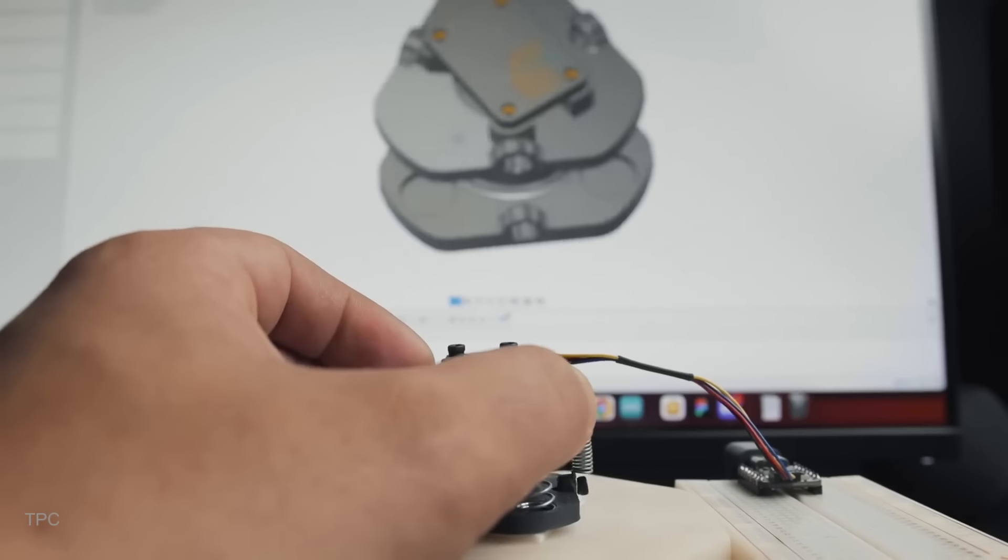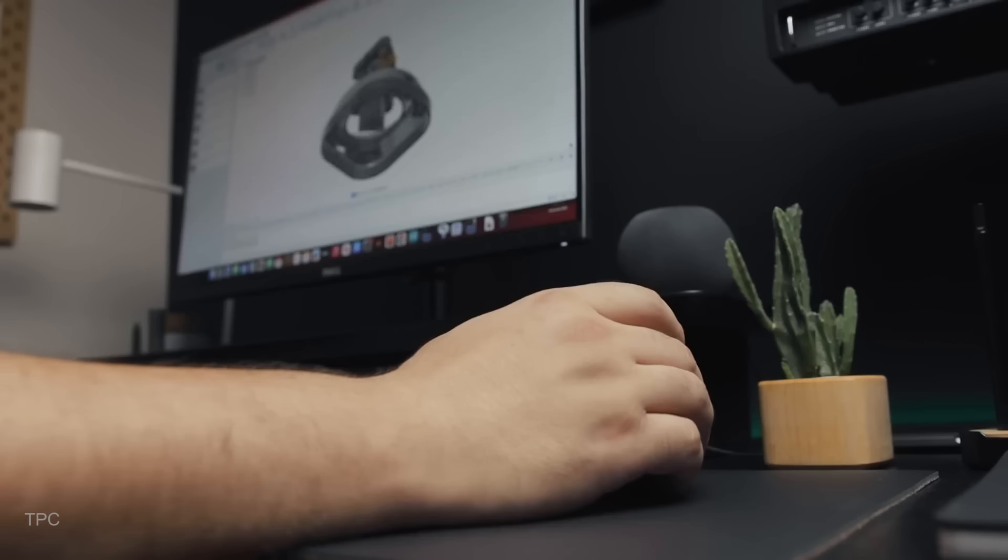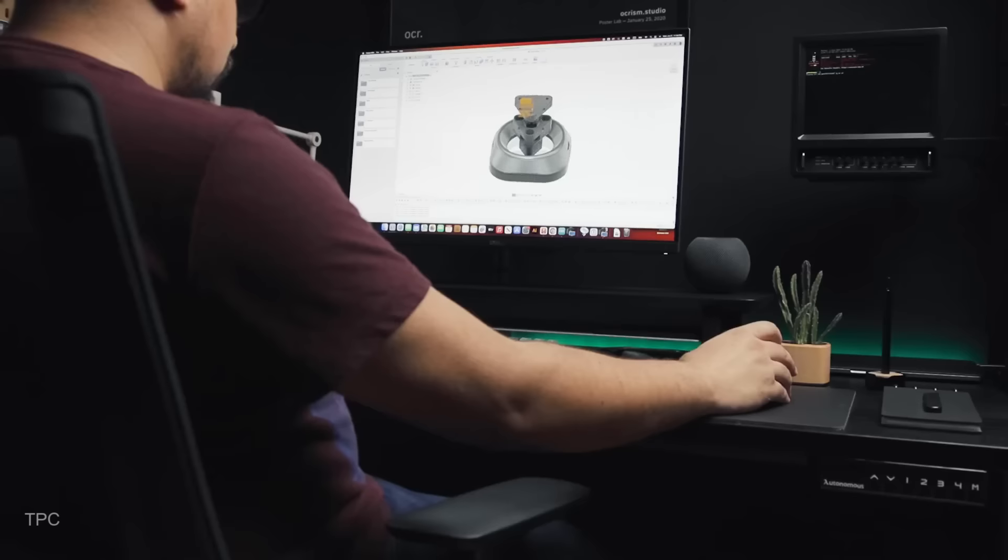After adding two push buttons to the prototype, he 3D-printed a custom case for the project. He finished the printed surface by sanding, polishing, and painting it for a smooth, professional look. Once assembled, the space mouse was ready, and seeing it in action was truly impressive.